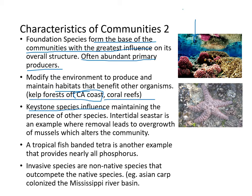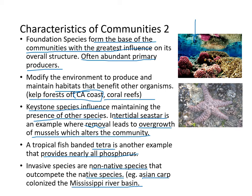Keystone species maintain the presence of other species. The intertidal sea star is an example — its removal leads to overgrowth of mussels, which alters the community. The tropical banded tetra also provides nearly all phosphorus in its ecosystem. Invasive species, not native to the area, can outcompete native species — Asian carp colonized the Mississippi River basin with no natural predators.